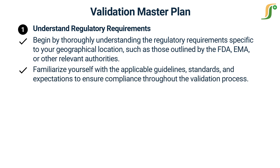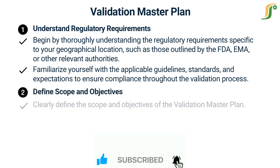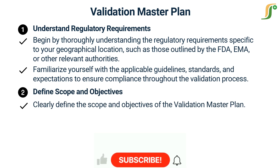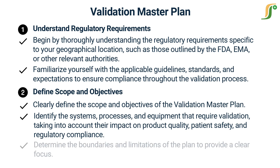The second step is to define scope and objectives. Clearly define the scope and objectives of the validation master plan. Identify the systems, processes, and equipment that require validation, taking into account their impact on product quality, patient safety, and regulatory compliance. Determine the boundaries and limitations of the plan to provide a clear focus.